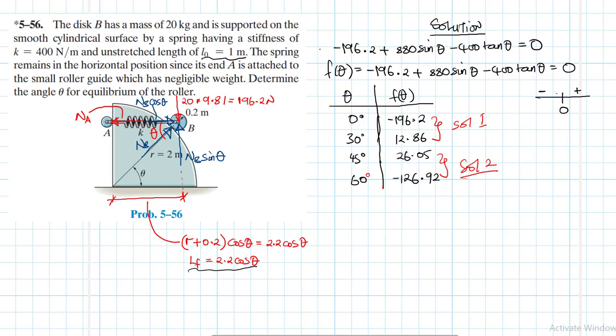I will just solve for solution 1. So we have zero and 30. It means we have a solution in between zero and 30.